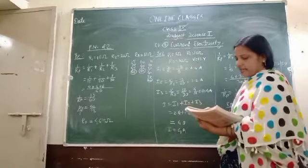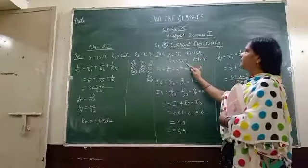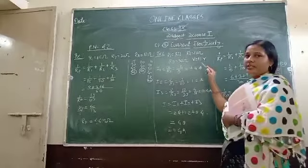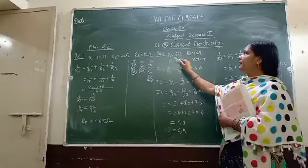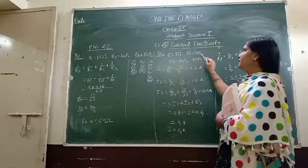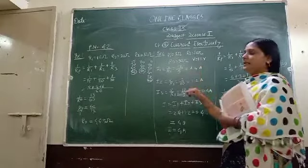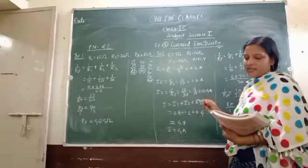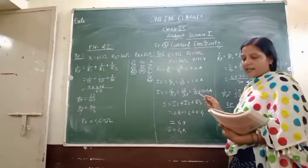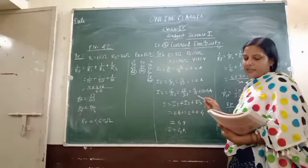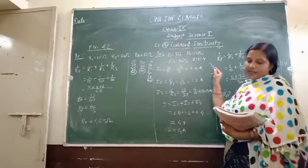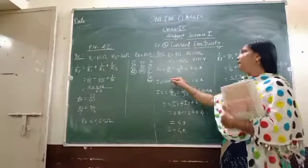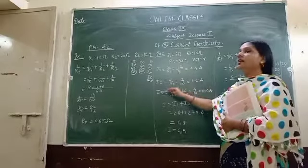Now for example number 2: three resistors having resistance of R1, R2, R3 are connected in parallel with a constant potential difference. R1 = 5 ohm, R2 = 10 ohm, and R3 = 30 ohm. The three resistors having resistance of 5 ohm, 10 ohm, and 30 ohm are connected in parallel, and the potential difference is 12 volts. We need to obtain the current flowing through the circuit.